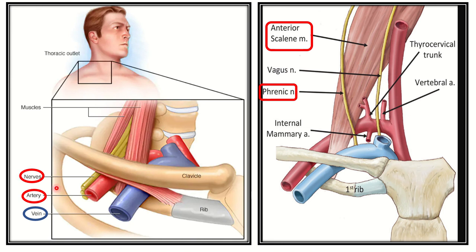The artery that passes behind the anterior scalene and anterior to the middle scalene is the subclavian artery. Another structure just behind the artery is the brachial plexus. To remember: there is a window between the anterior and middle scalene through which the subclavian artery and brachial plexus pass.